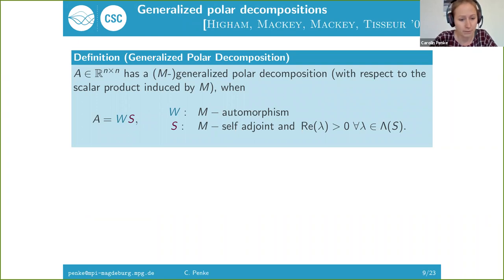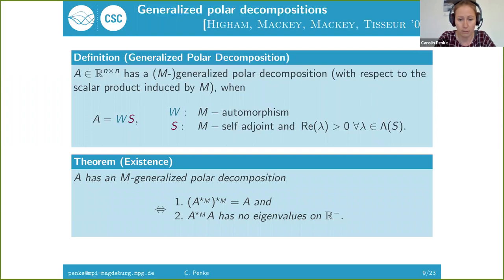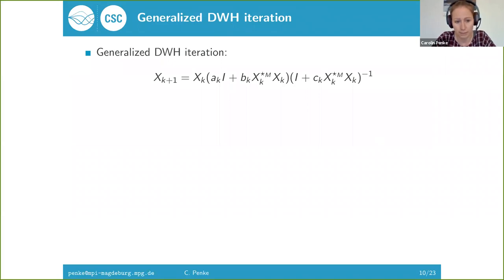The adjoint is the generalization of the transpose. We call a matrix self-adjoint when it's the same as its adjoint, and we call a matrix an automorphism if its adjoint is the same as its inverse. This is the generalized polar decomposition. A matrix might be decomposed into a matrix W, which is an automorphism with respect to this inner product, and a matrix S, which is self-adjoint with respect to this inner product and has eigenvalues whose real part is larger than zero. It doesn't always exist, in contrast to the standard polar decomposition. It exists if and only if these two conditions hold. These generalized polar decompositions can also be computed via all kinds of iterations.